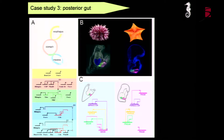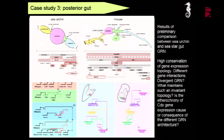The third case is the posterior gut, where we see a very interesting story of two ParaHox genes — Xlox and Cdx — that are recurrently used in many animals to pattern this region. They have a very conserved topology of gene expression in all animals including vertebrates. There is a big question here about what constraint maintains the position of this expression domain so perfectly conserved.